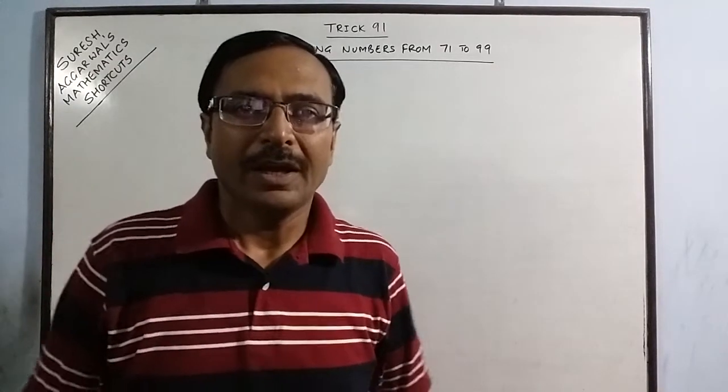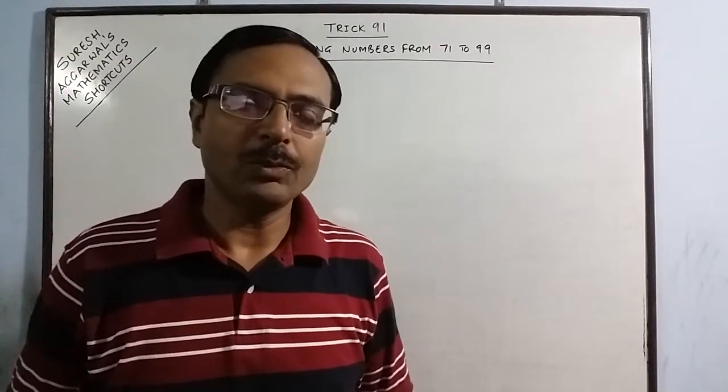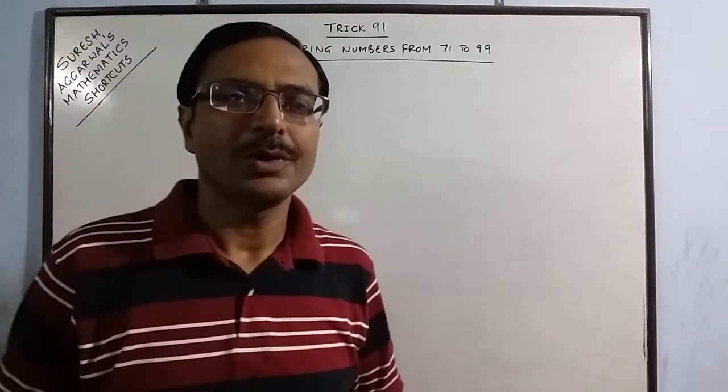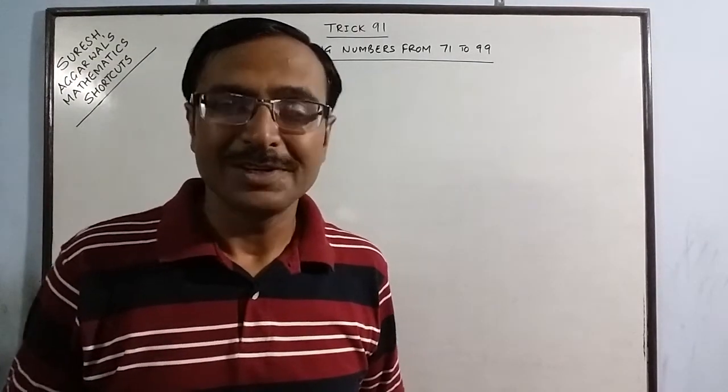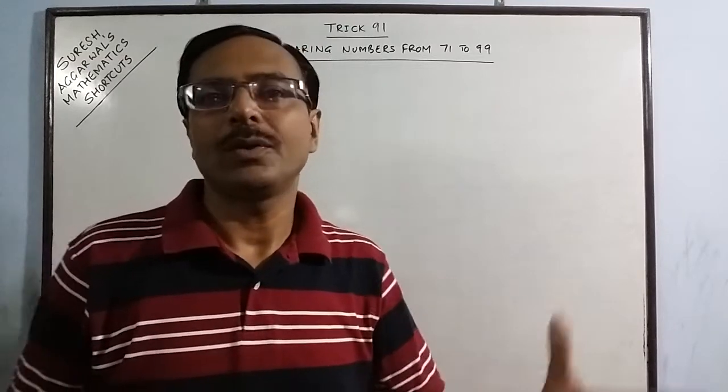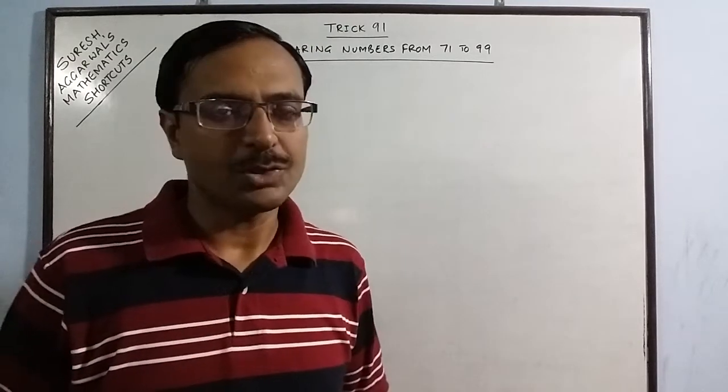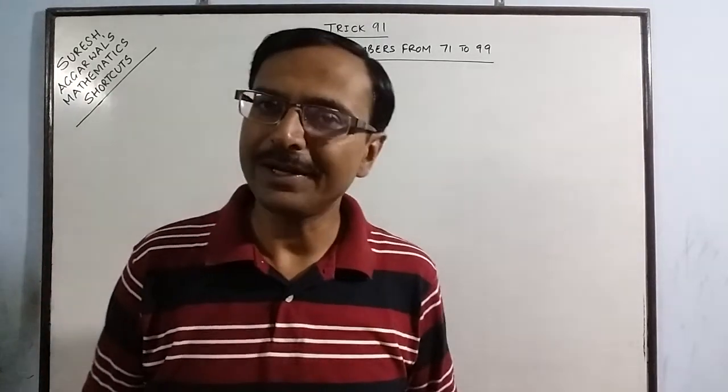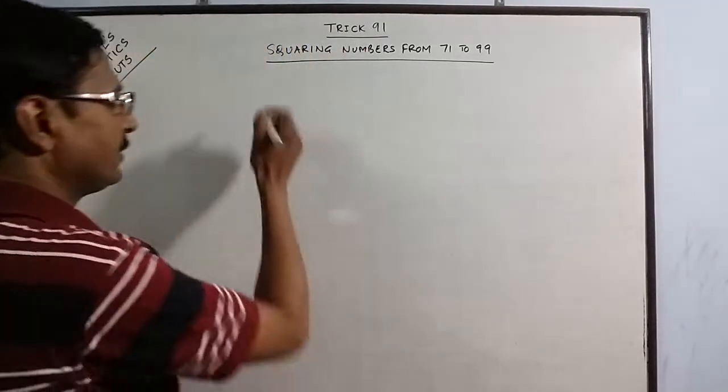Now I have posted one or two more methods of squaring. You can add this method also in your bag of knowledge so that whenever it is required you can find a square of 71, 72, 73 up to 99 verbally within 3 or 4 seconds. Now let us try and understand this method.